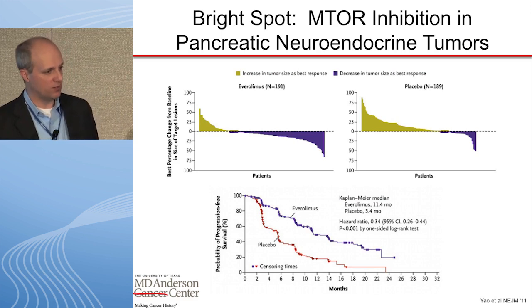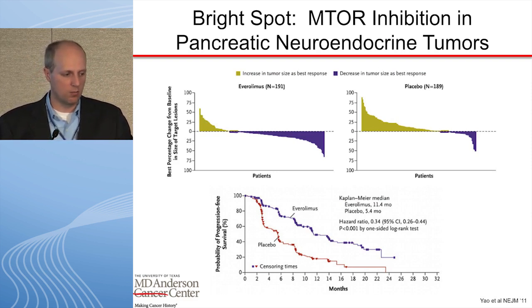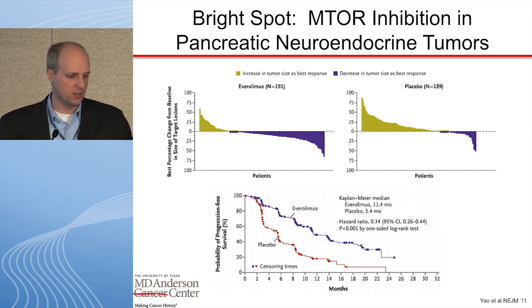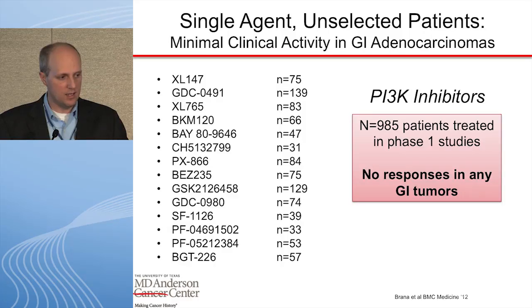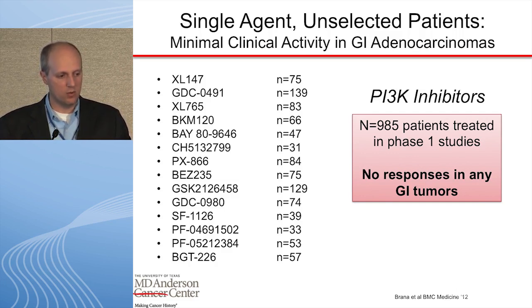Before I delve into the not-so-bright spots, I'll start with the good news: in pancreatic neuroendocrine tumor, mTOR inhibition clearly can play a role. There are some nice studies demonstrating the role of everolimus, and I highlight one New England Journal paper from James Yao as an example. But that is not the rule for GI cancers. When we look at single-agent activity for a variety of unselected patients, there really weren't any responses in GI tumors in phase one — with a huge number of patients, there was just no reproducible signal as a single agent.